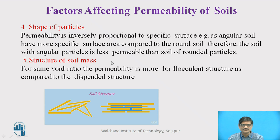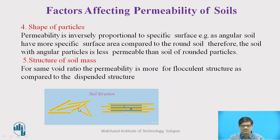The structure of the soil mass also plays a role. For the same void ratio, permeability is more for a flocculent structure compared to a dispersed structure. In the image we can see flocculated and dispersed structures. In the dispersed structure the void ratio is smaller, while in the flocculent structure the void ratio is more — therefore permeability is also observed to be more in flocculent structure.